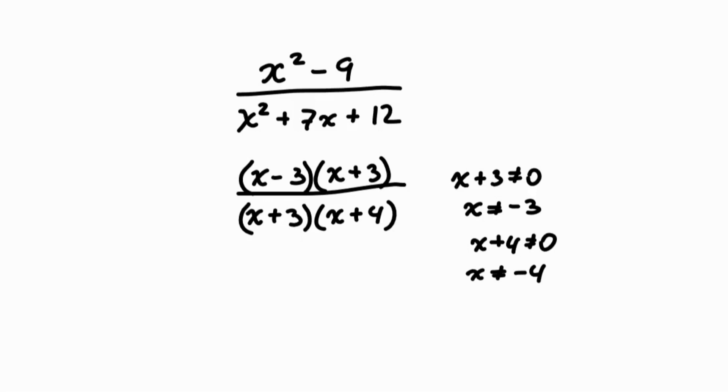Now let's see what we can potentially reduce. So we can clearly see that there are two identical factors, x plus 3 and x plus 3. Everything is multiplied here, so we can reduce these two. And the remaining simplest rational expression is now x minus 3 over x plus 4 with the following restrictions.